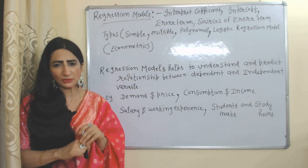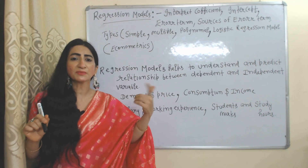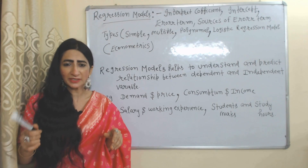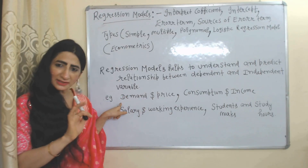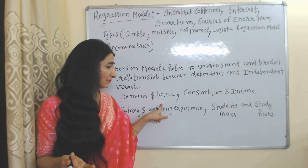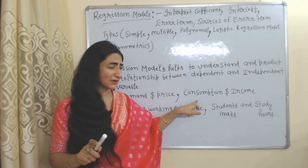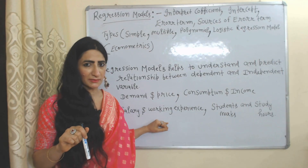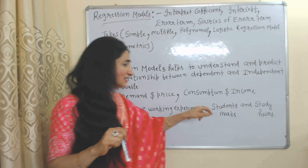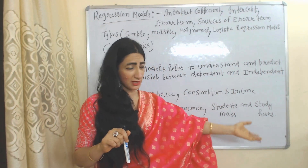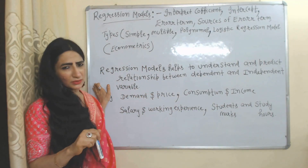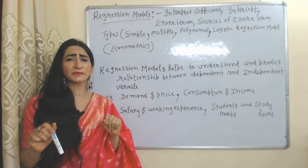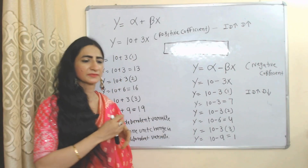What do you mean by a regression model? A regression model helps to understand and predict the relationship between dependent and independent variables. For example, demand is a dependent variable and price is an independent variable because demand depends on price. Consumption is a dependent variable and income is an independent variable. Salary is a dependent variable and working experience is an independent variable. Similarly, student marks are a dependent variable and study hours are an independent variable. Regression models help to understand these relationships and also predict the value of a dependent variable based on the independent variable.